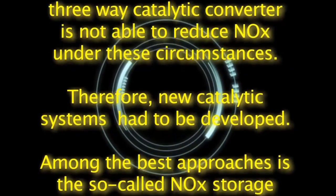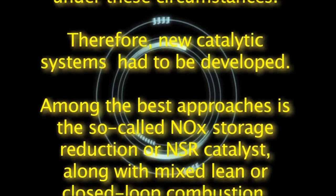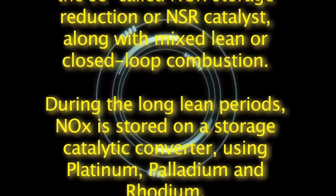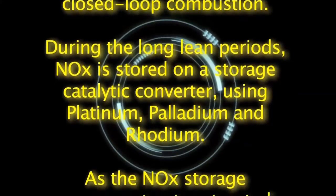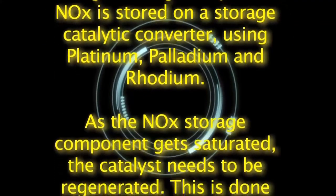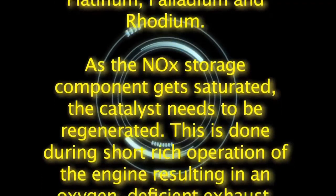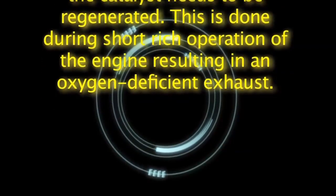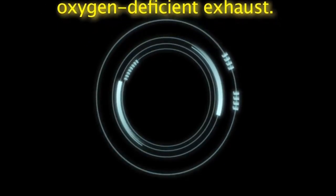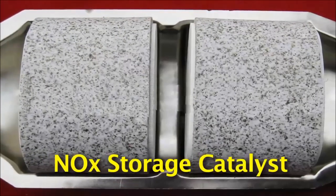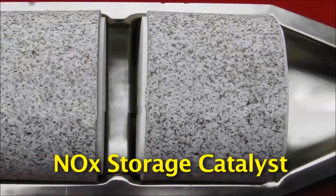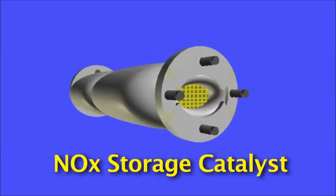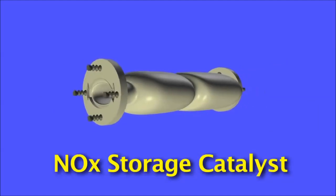Therefore, new catalytic systems had to be developed. Among the best approaches is the so-called NOx storage reduction or NSR catalyst, along with mixed lean or closed loop combustion. During the long lean periods, NOx is stored on a storage catalytic converter using platinum, palladium, and rhodium. As the NOx storage component gets saturated, the catalyst needs to be regenerated — this is done during short rich operation of the engine, resulting in an oxygen-efficient exhaust. Consequently, the stored NOx is released and reduced over noble metals into the harmless N2 or nitrogen gas.